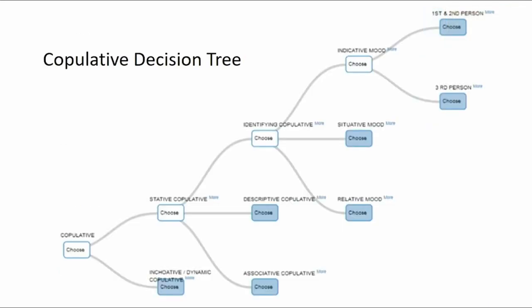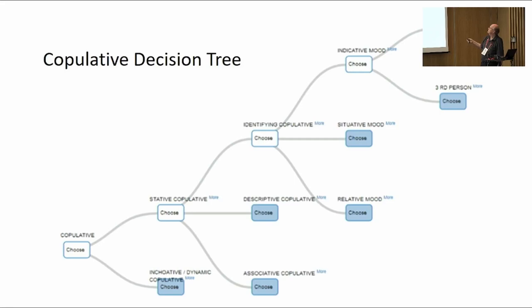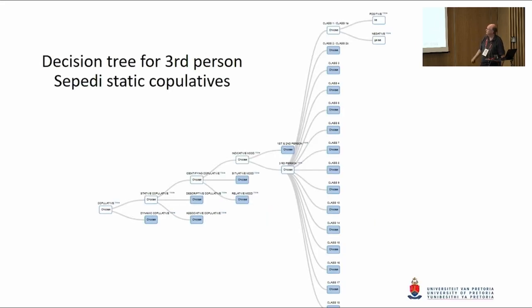The copulative decision tree looks something like this. You start off here with the copulative — you can split between the two types of copulative. If you decide to use the stative copulative, you have the three types here, and you can choose whether you want the indicative, situative, or relative mode. If you take the indicative mode, you can say: do I want it in the first and second person or the third person? Based on these choices, eventually you get 18 noun classes from which the noun could come. If you take the first class, which is for humans, you have a positive or negative form of the copulative — which makes it rather a complicated thing.